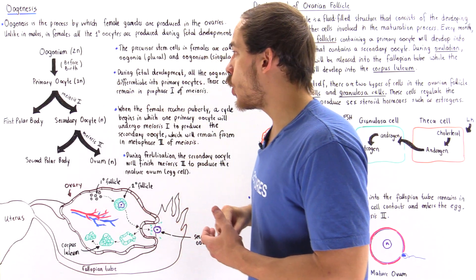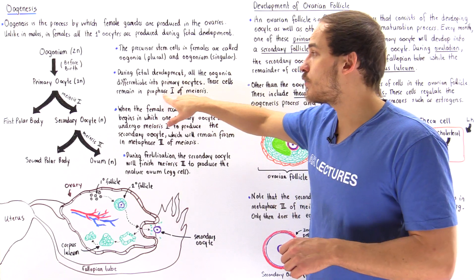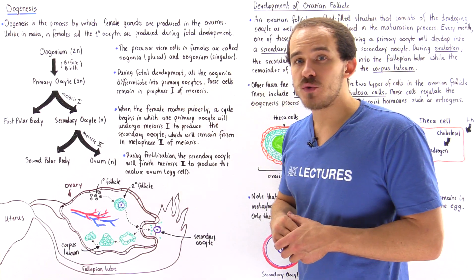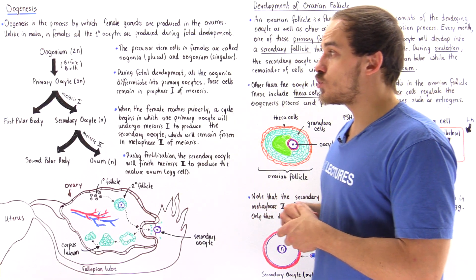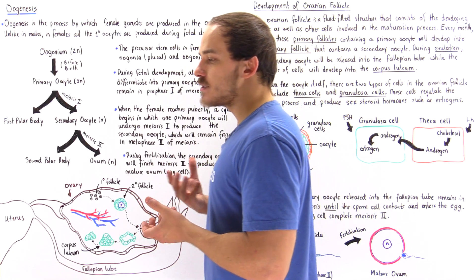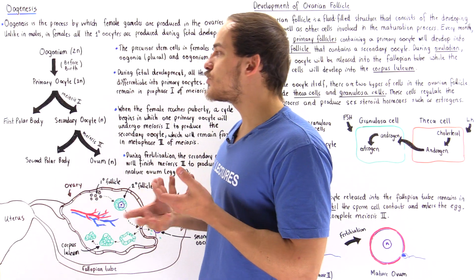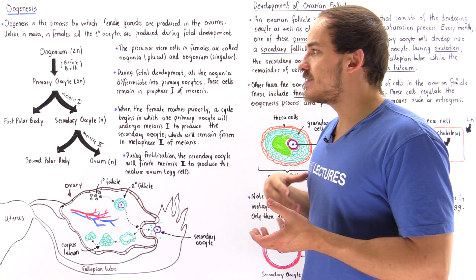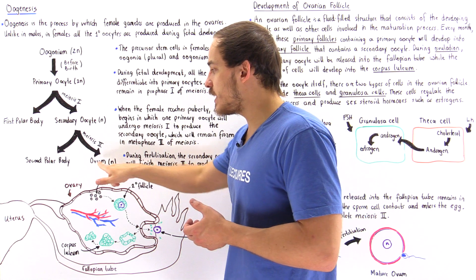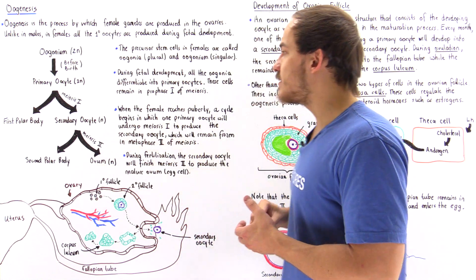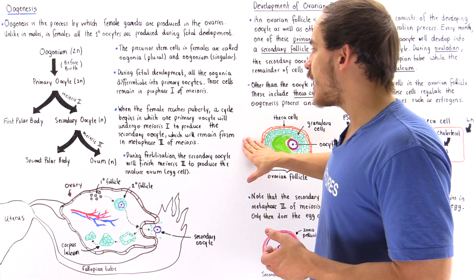Once that female individual is born, all the stem cells have become primary oocytes, and these primary oocytes are frozen — they remain in prophase 1 of meiosis until puberty is reached. When that female individual reaches puberty, she begins the menstrual cycle, which describes the process by which the primary oocyte eventually develops into that egg cell — the single ovum that can be fertilized by the sperm cell to produce the zygote.